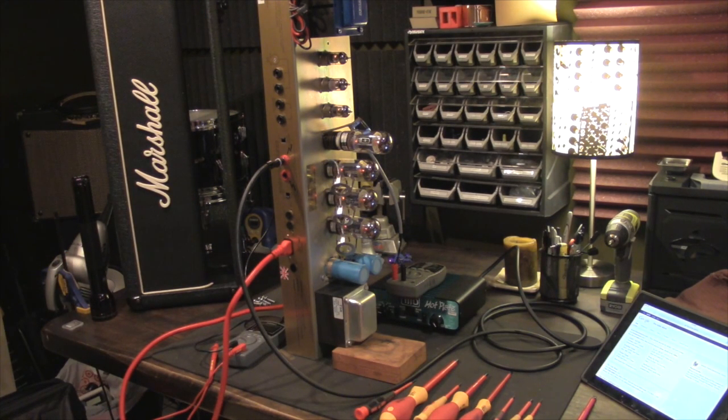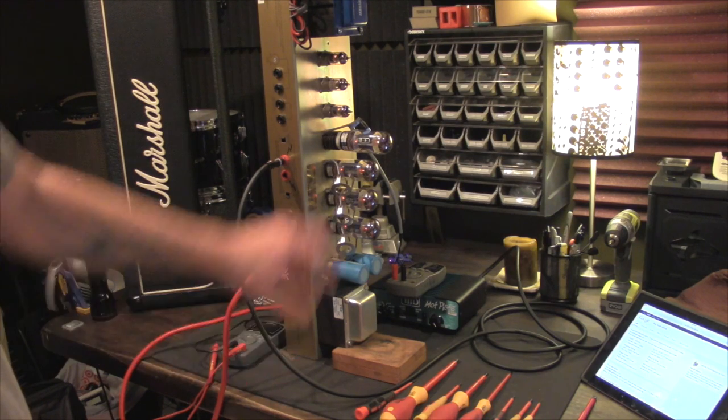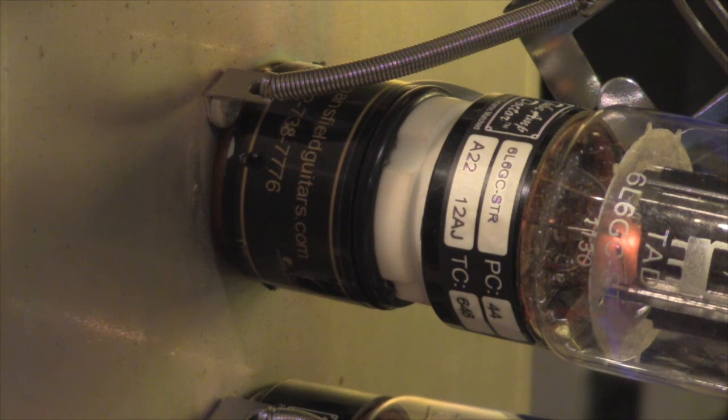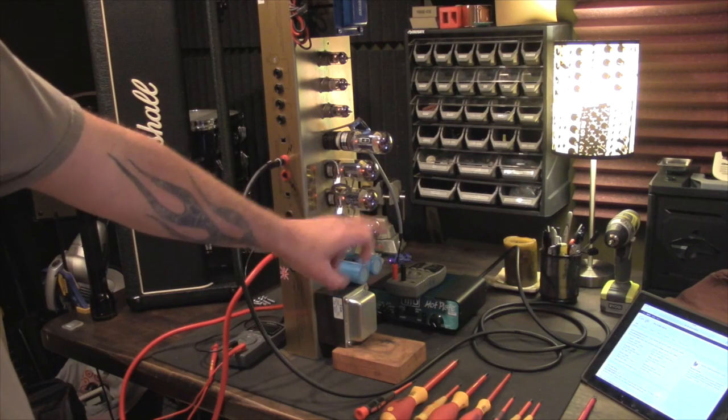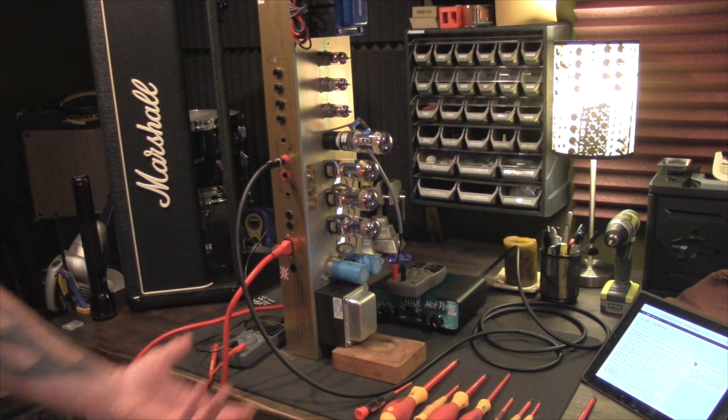The next thing that you're going to need, at least the way that I do it, is what's called a bias probe. It's a single tube socket that's attached to a set of leads that goes into your multimeter. And obviously you're going to need a multimeter. It can be analog or digital.